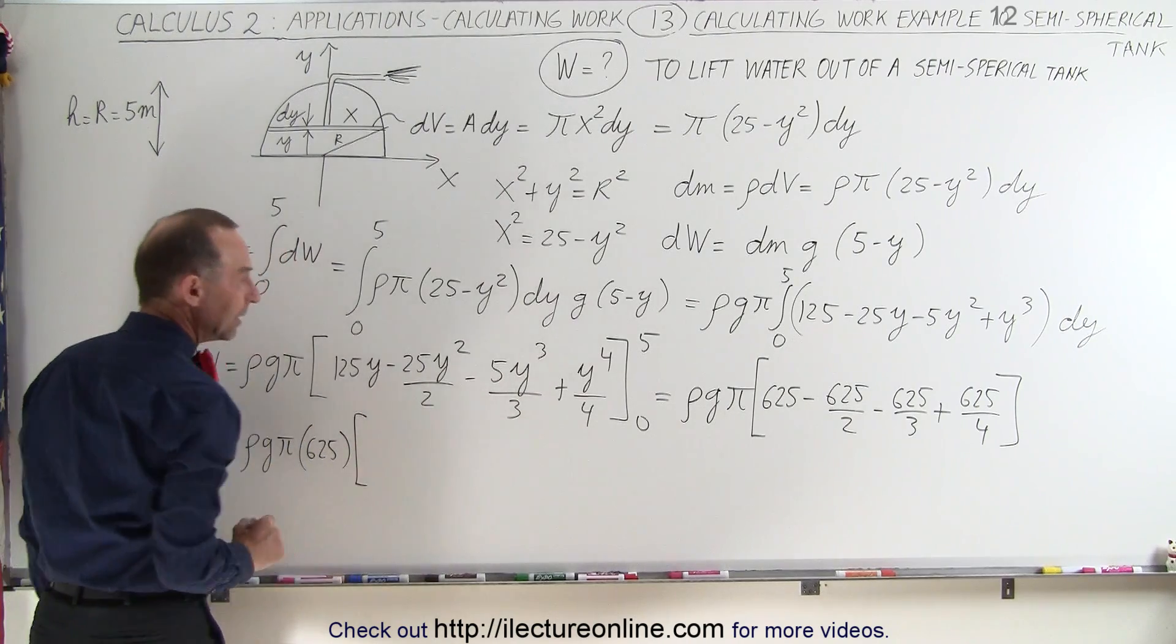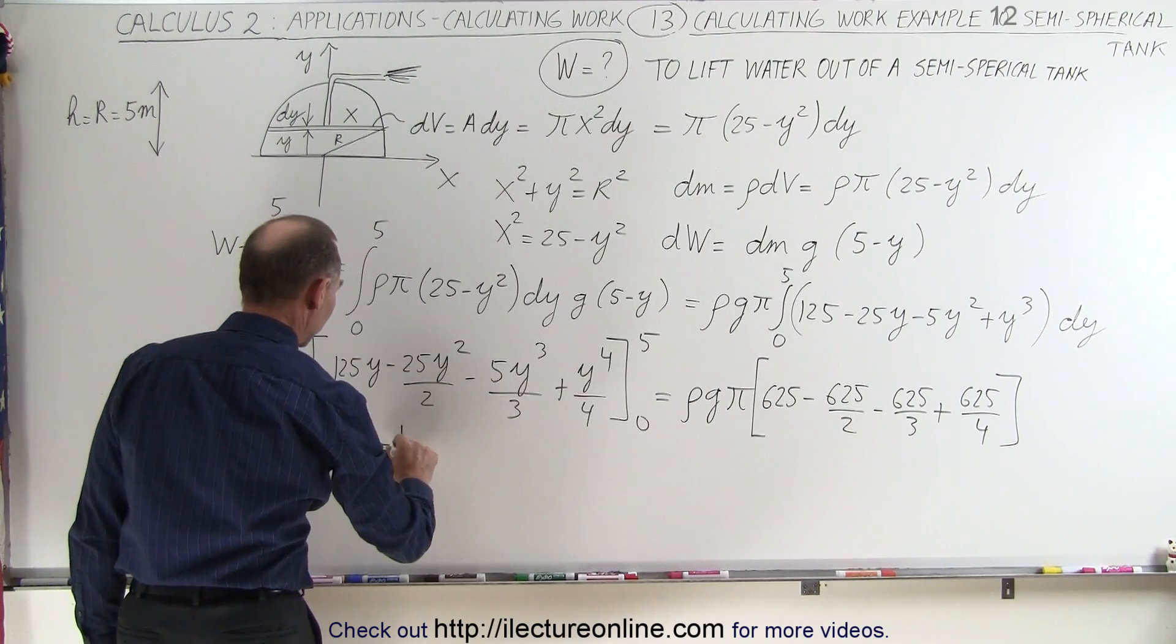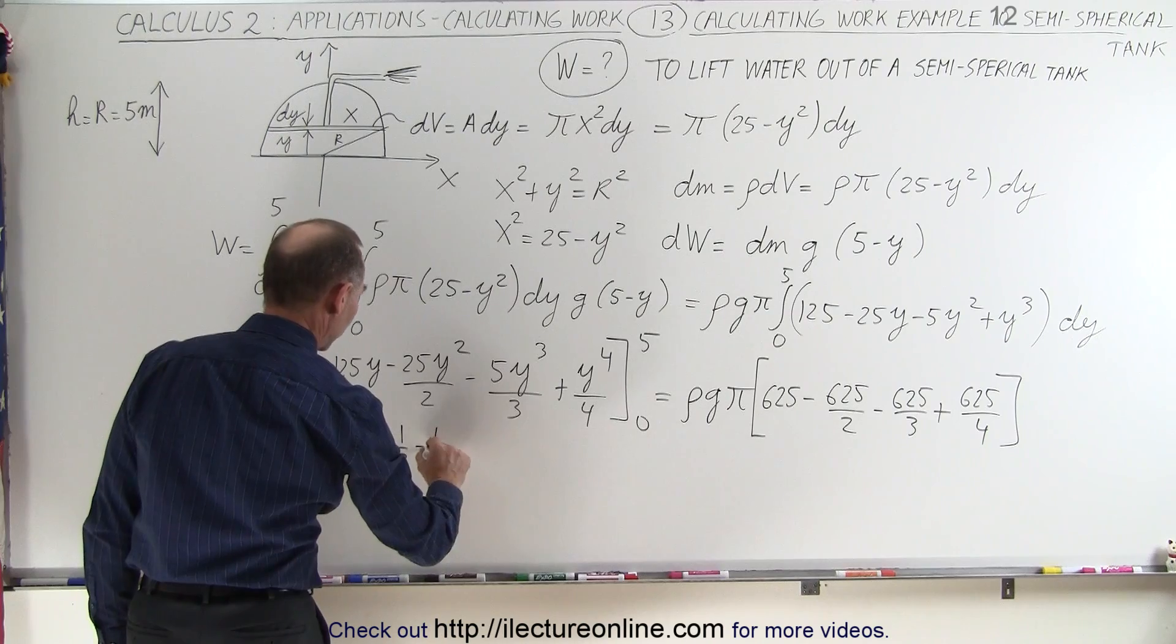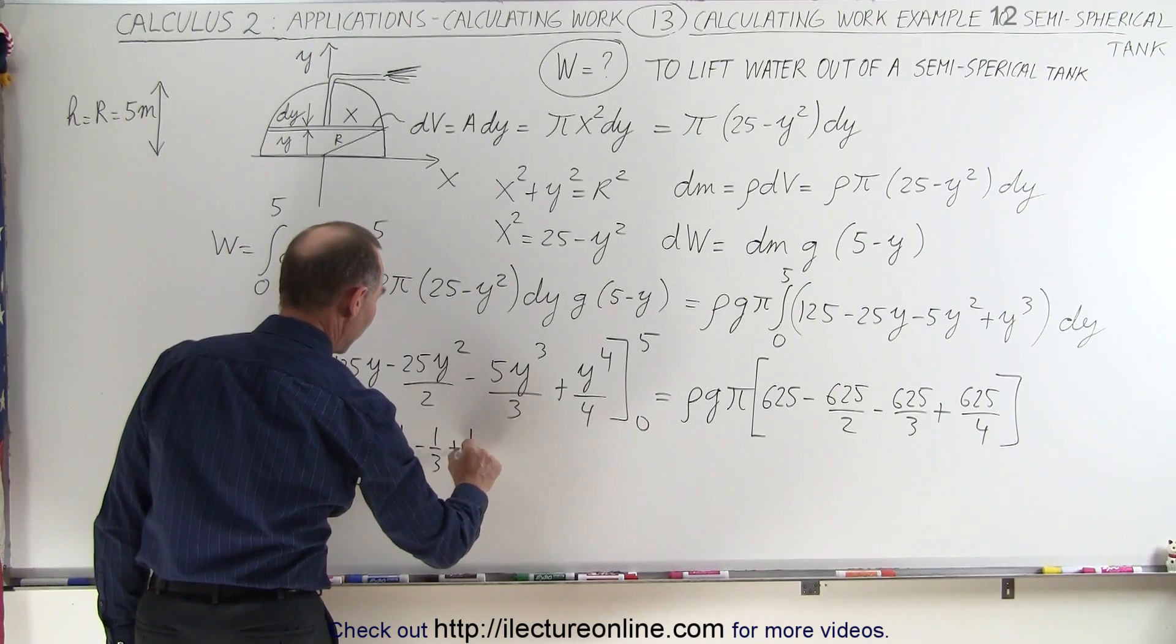So this means that work done equals density times g times π times 625 times [1 - 1/2 - 1/3 + 1/4].